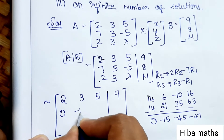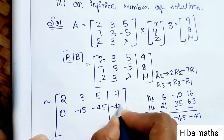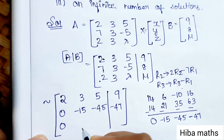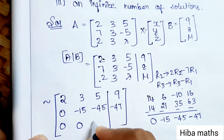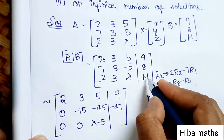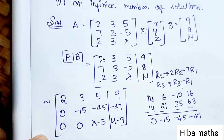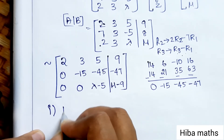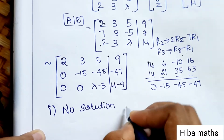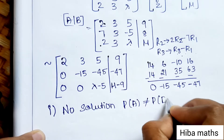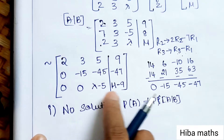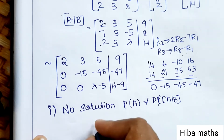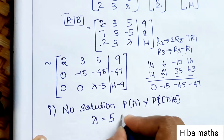R3 changes with R3 minus R1: 2-2=0, 3-3=0, λ-5, ν-9. So R3 becomes: 0, 0, λ-5, ν-9.